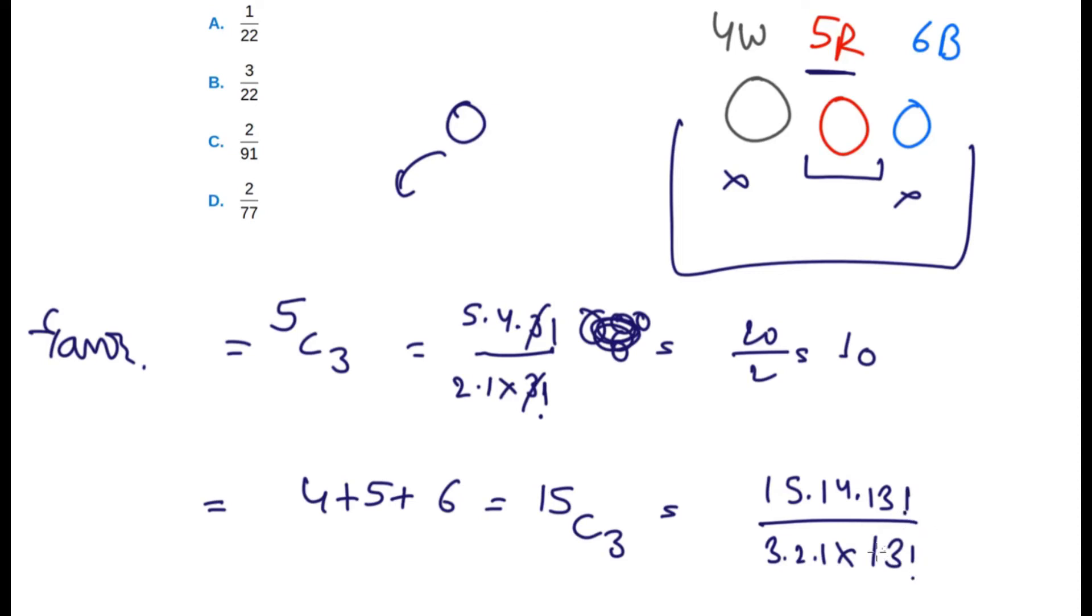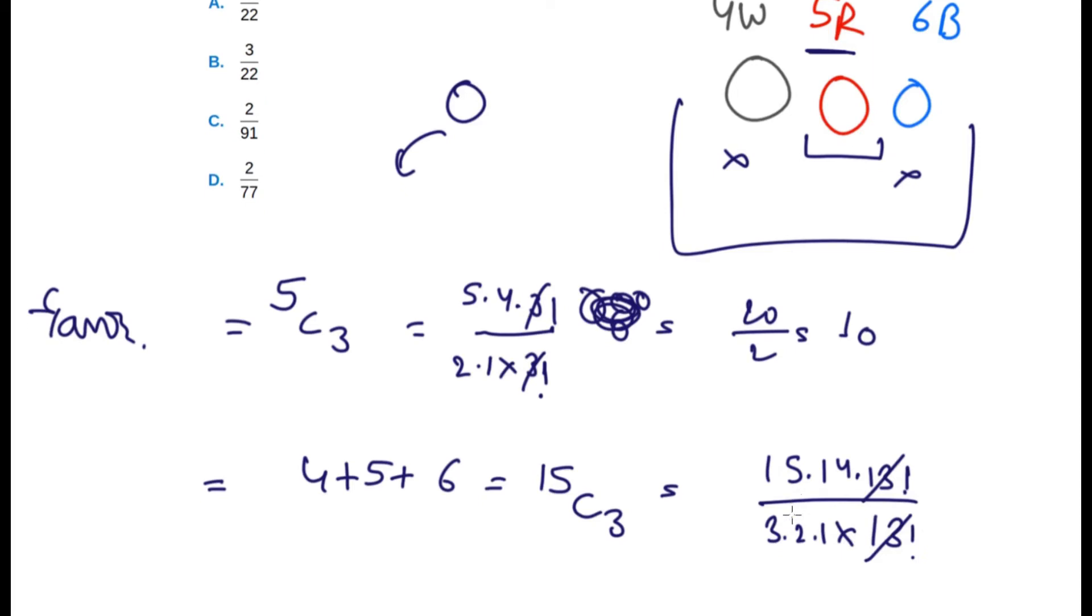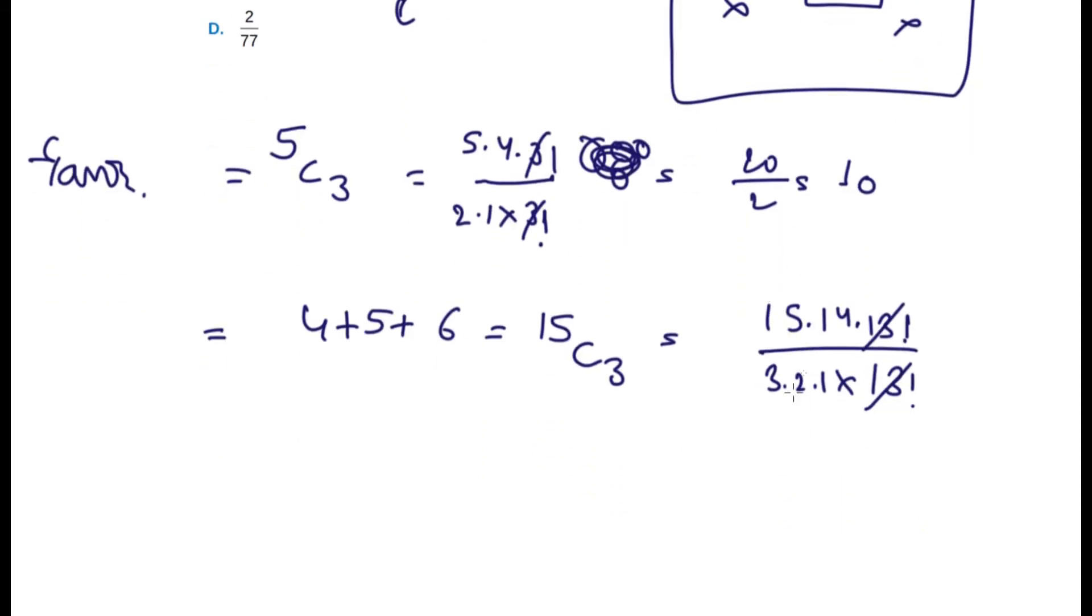So this will result in 15 times 14 times 13 divided by 3 times 2 times 1, and 13 factorial will just cut. This will remain. We're left with this. If we can cut anything, yeah sure we can cut this by 2.